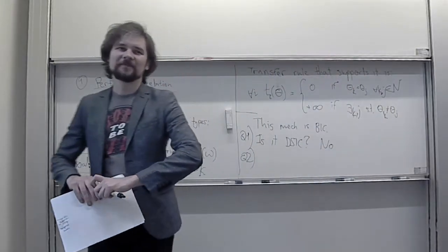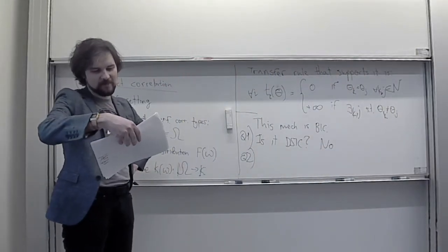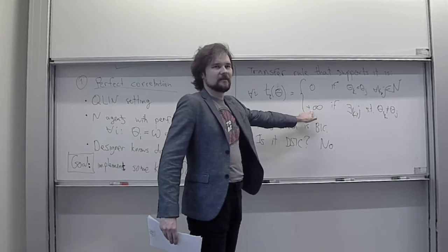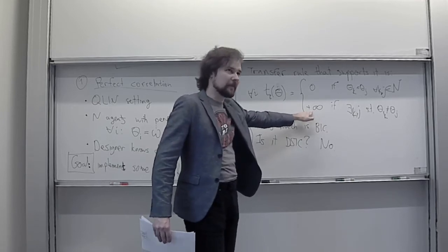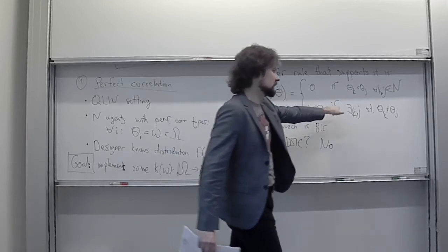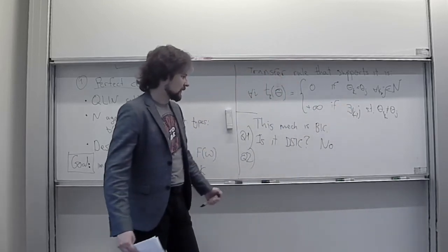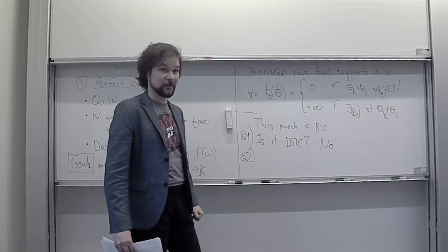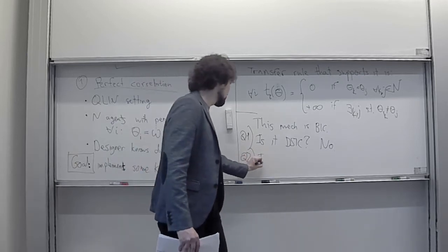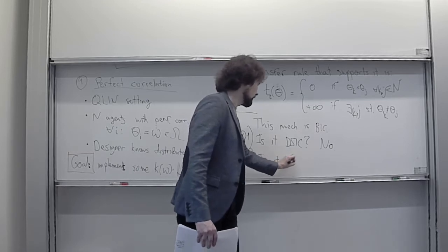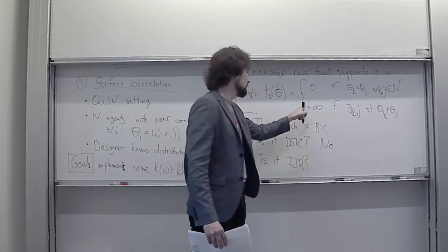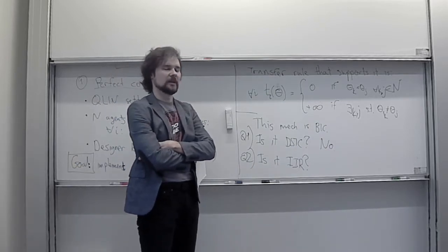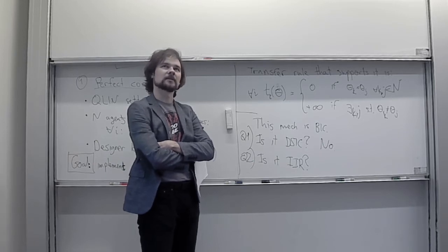Another question — maybe a trick question, maybe not: we are assigning infinite money payments to the mechanism when reports do not align. Does this interfere with interim individual rationality? Is our mechanism interim IR with these infinite transfers?